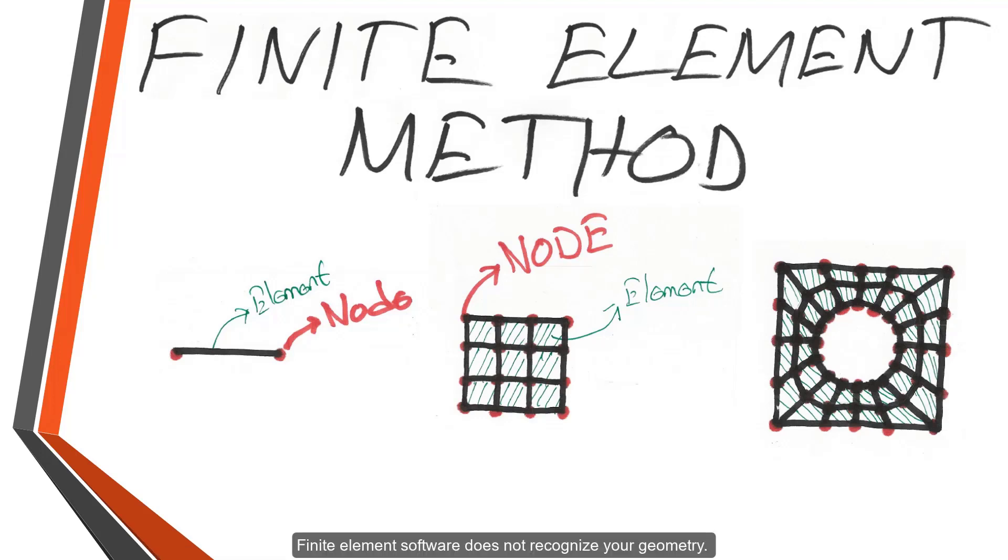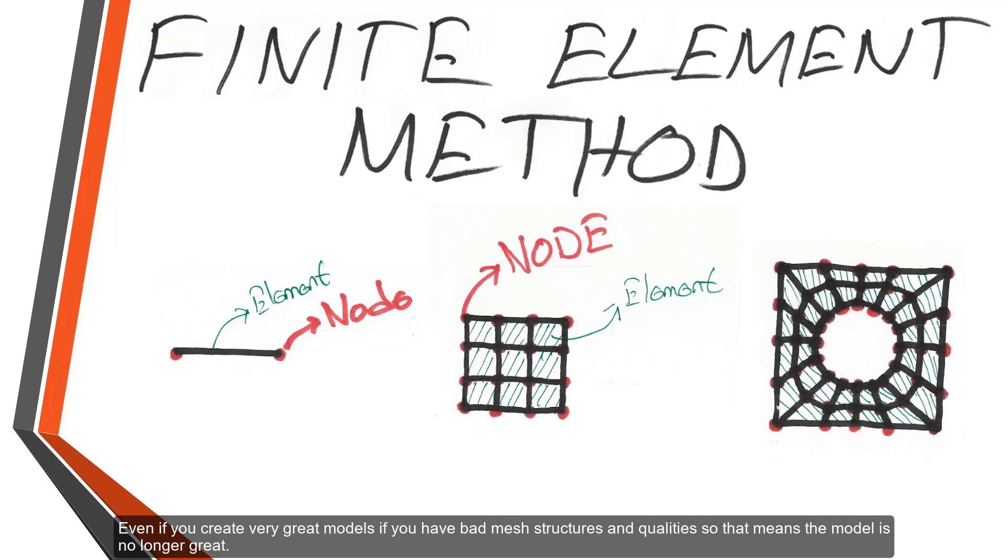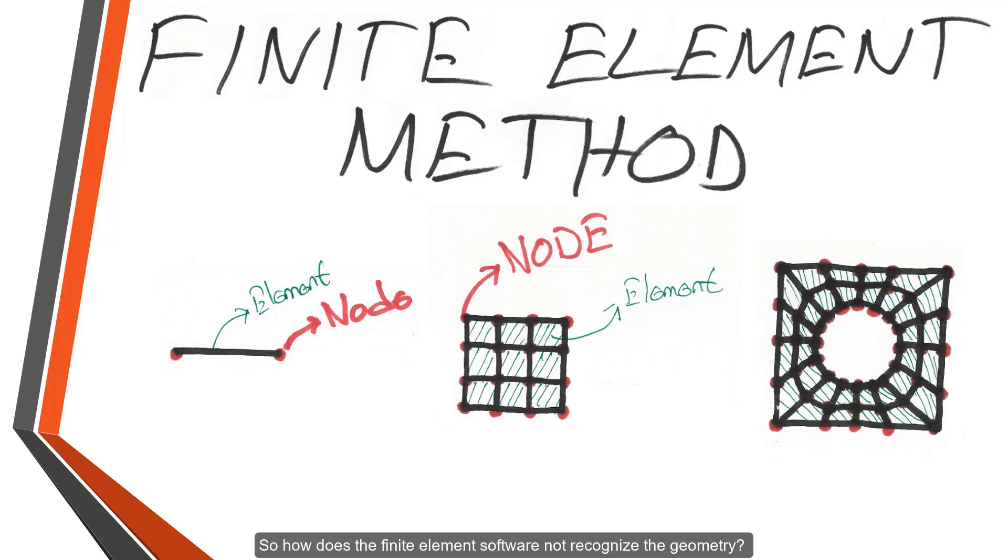Finite element software doesn't recognize your geometry. Even if you create very great models, if you have bad mesh structures and qualities, that means the model is no longer great. How does the finite element software not recognize the geometry? It reaches the results with the nodes and elements that we created. Nodes and elements represent the geometry. You already know the FEA divides complex models into small elements that are simpler to calculate.